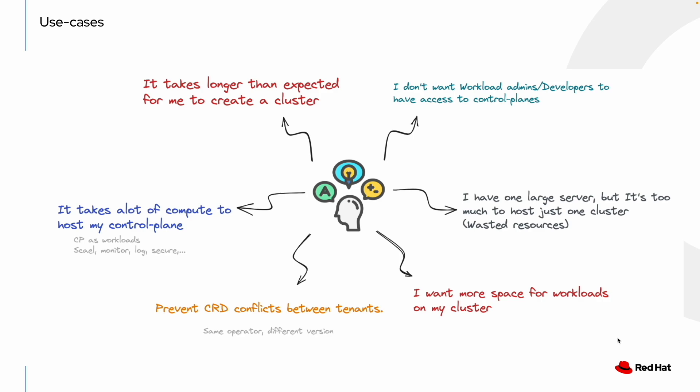Let's explore the use cases for hosted control planes and identify its target audience. For example, while it typically takes about an hour to spin up a standalone OpenShift cluster, with HyperShift the control plane components are ready in about half the time. If you have a large server and want to fully utilize its resources, HyperShift allows you to run multiple hosted clusters on it, which is ideal for situations where you need different clusters for different application requirements.